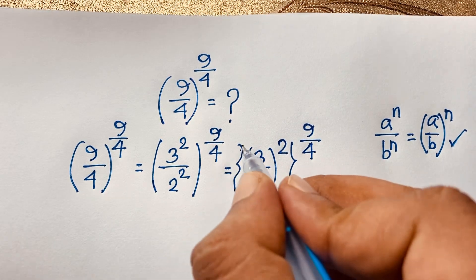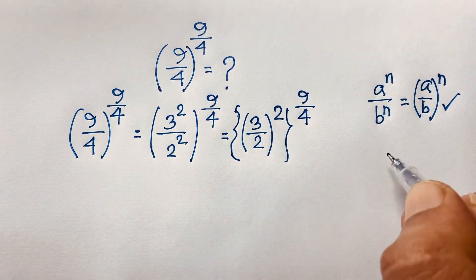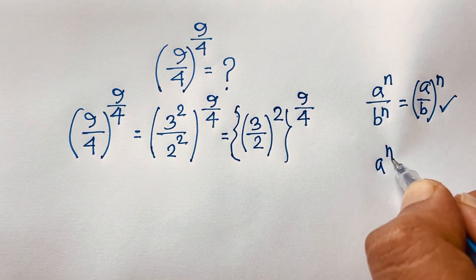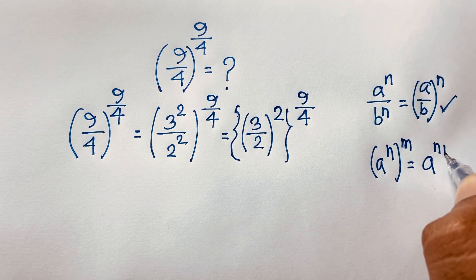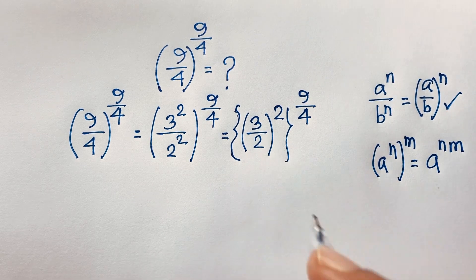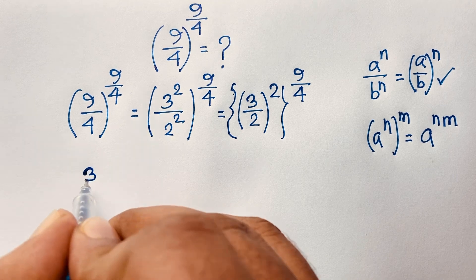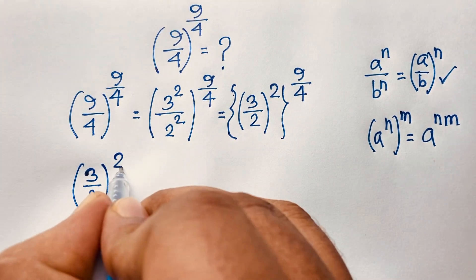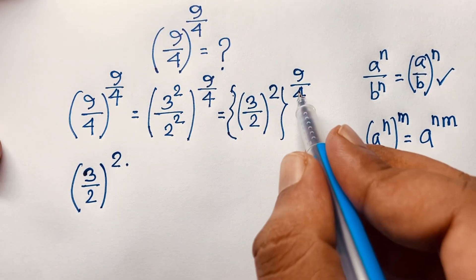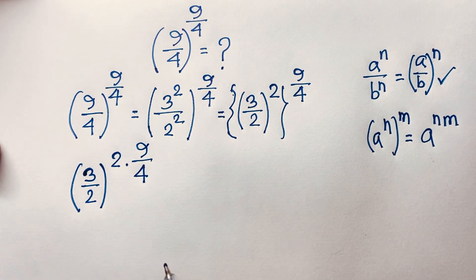Now we apply the formula: (a^n) whole to the power m equals a to the power n times m. Applying this formula here, the expression becomes (3/2) whole to the power 2 times 9/4.